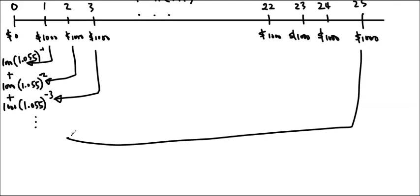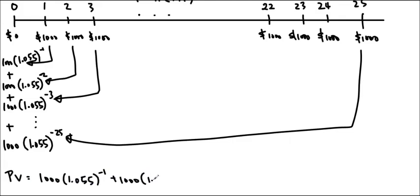That would have been worth $1,000 times 1.055 to the negative 25 in the first year, or in year 0. So we add all these together to get the present value. So present value is equal to $1,000 times 1.055 to the negative 1 plus $1,000 times 1.055 to the negative 2 and so forth until we get $1,000 times 1.055 to the negative 25. And you can see that this is a geometric series.